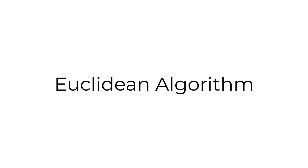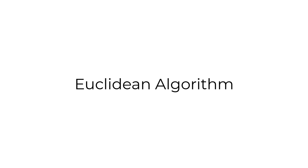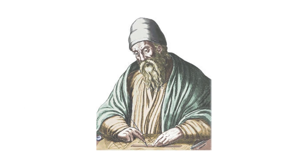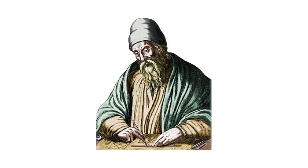In this video, we will learn about the Euclidean Algorithm. Created by Euclid in 300 B.C., the Euclidean Algorithm is a nice trick to help find the greatest common divisor of two numbers. We are going to learn the Euclidean Algorithm by using it to find the greatest common divisor of 540 and 957.